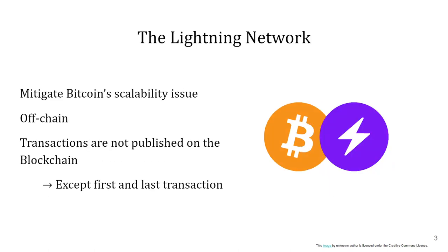The Lightning Network promises to mitigate the scalability issue of Bitcoin by allowing users to perform transactions off-chain, meaning that transactions are not published on the blockchain itself, as broadcasting this transaction is one of the main factors for Bitcoin's low performance.